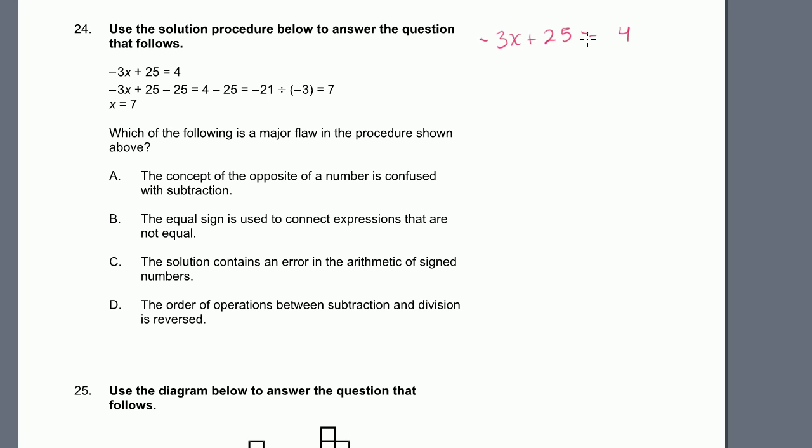the first thing I would do is subtract 25 from both sides of the equation. So I would take a minus 25 from the left-hand side, and then a minus 25 from the right-hand side. And it looks like that's what the person did. He took a minus 25 there, and he took a minus 25 just like that. And then he said, OK, well that's the same thing as minus 21.